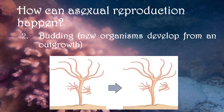Another way of asexual reproduction is by budding. In budding, new organisms develop from an outgrowth. An example of an animal that undergoes budding is the hydra.